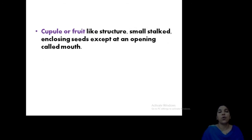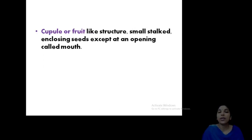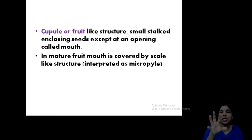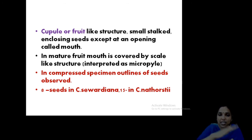The cupule or fruit-like structure is a small stalked structure that encloses seeds except at an opening called the mouth. You can see an opening here — that opening is the mouth. The seeds are enclosed in a cover or fruit-like structure called the cupule. In the mature fruit, the mouth is covered with a scale-like structure, which is also known as the micropyle. In compressed specimens, outlines of seeds are observed — in the compressed type you can see markings of seeds in the compression.